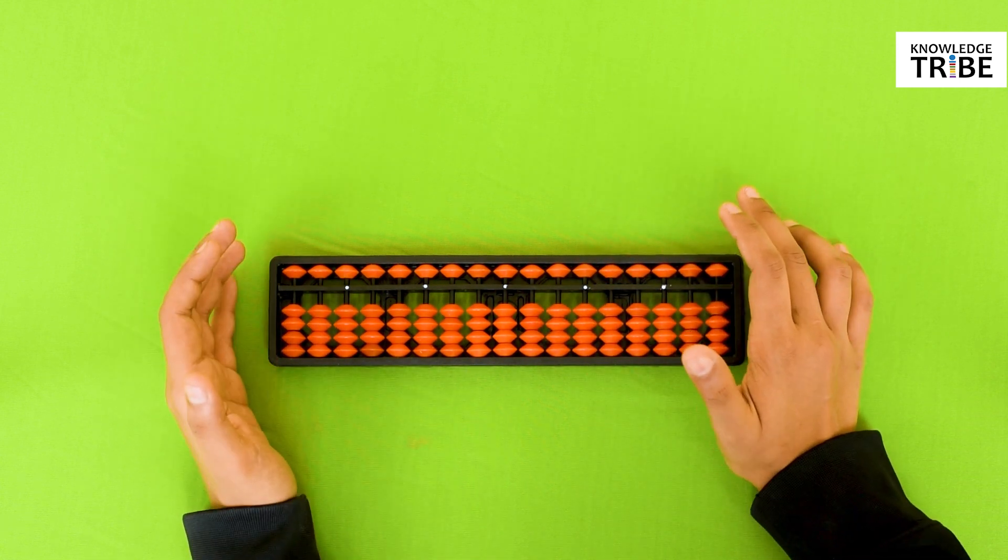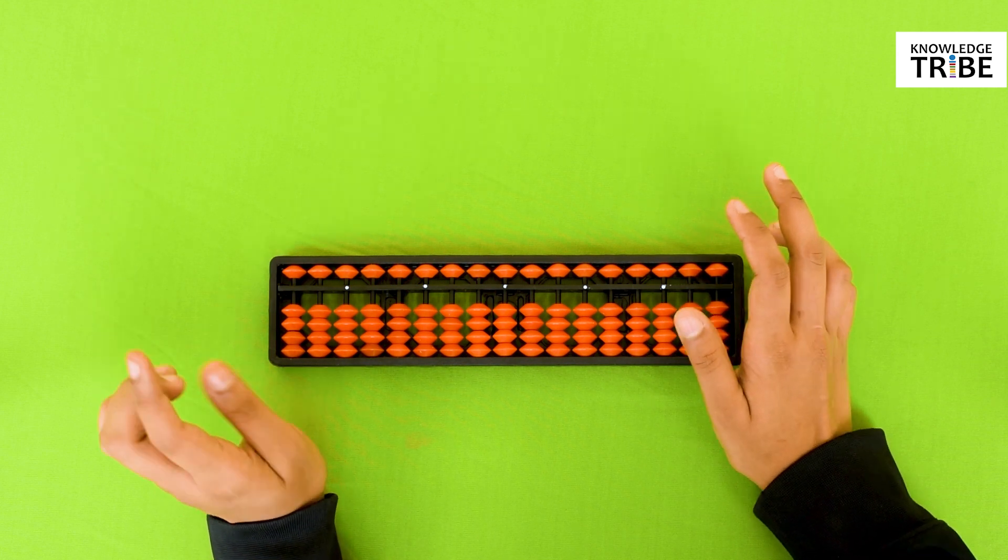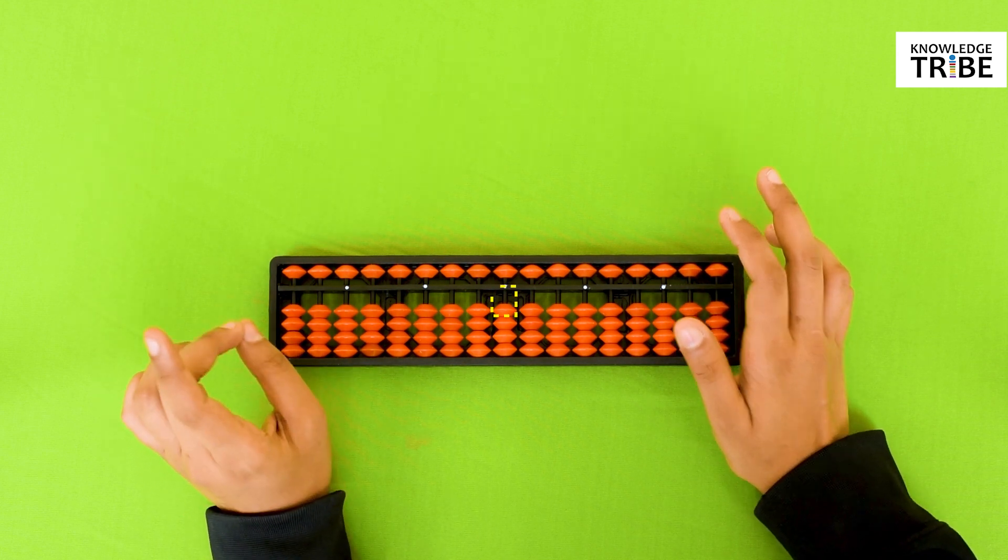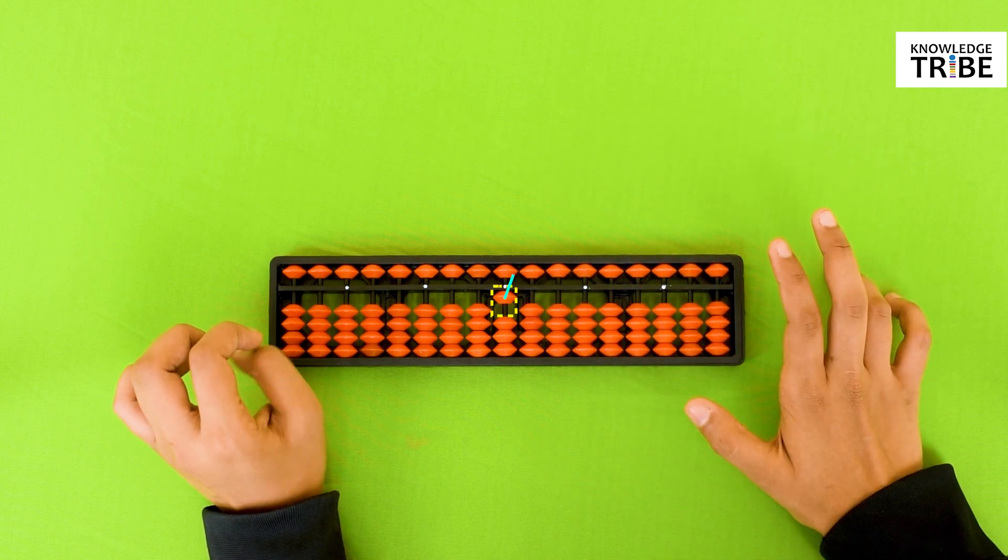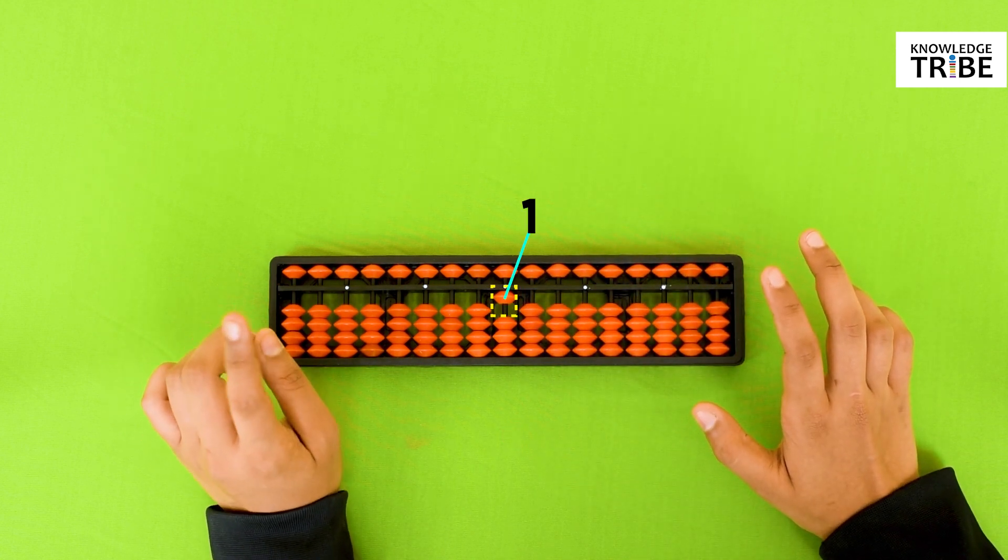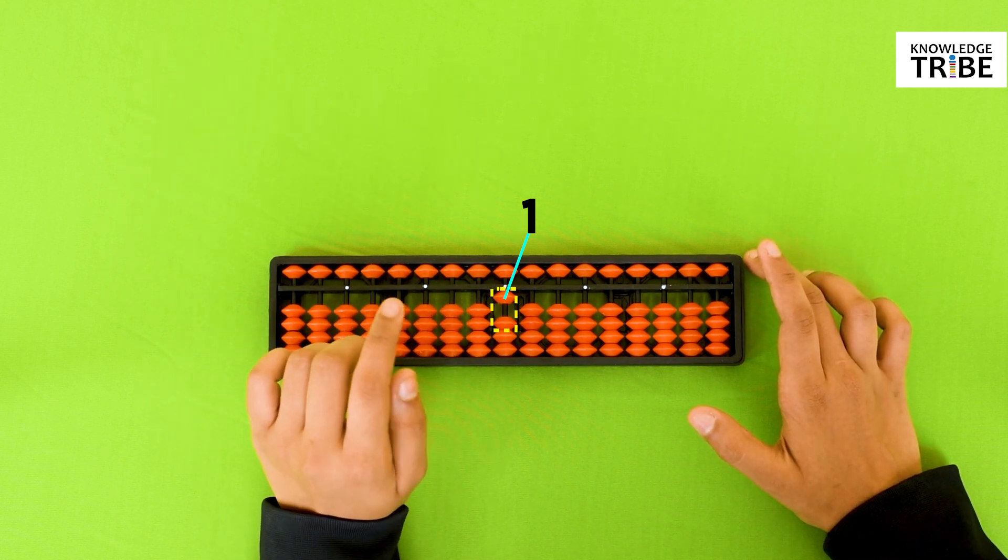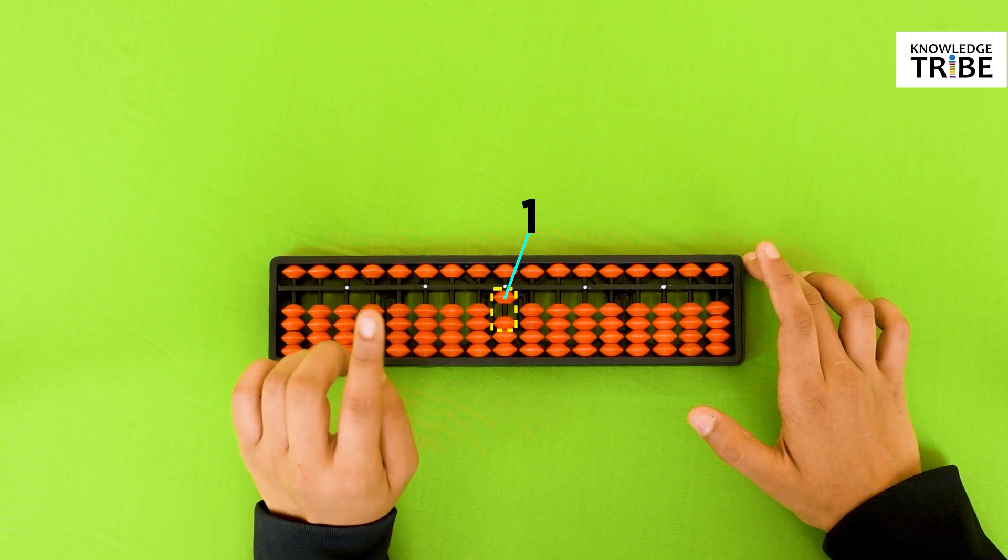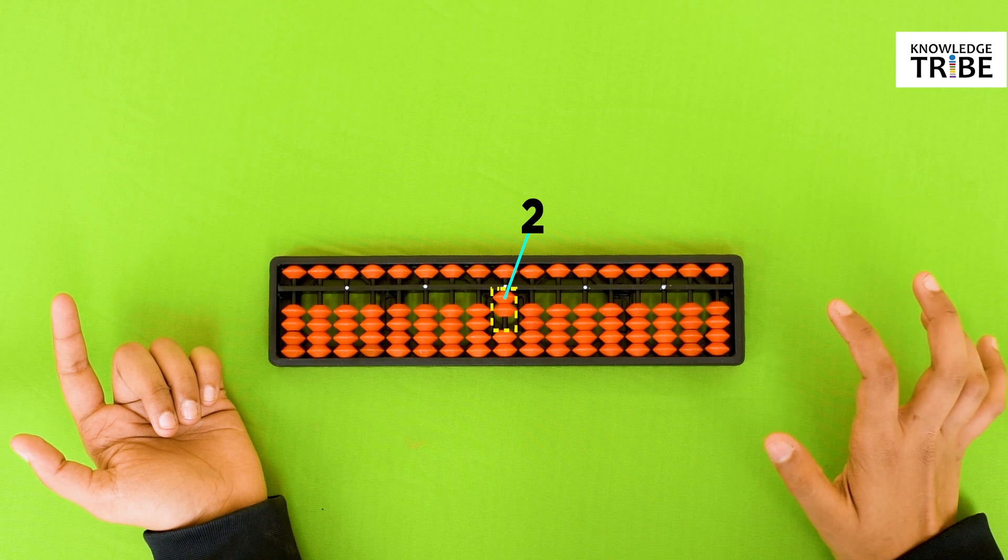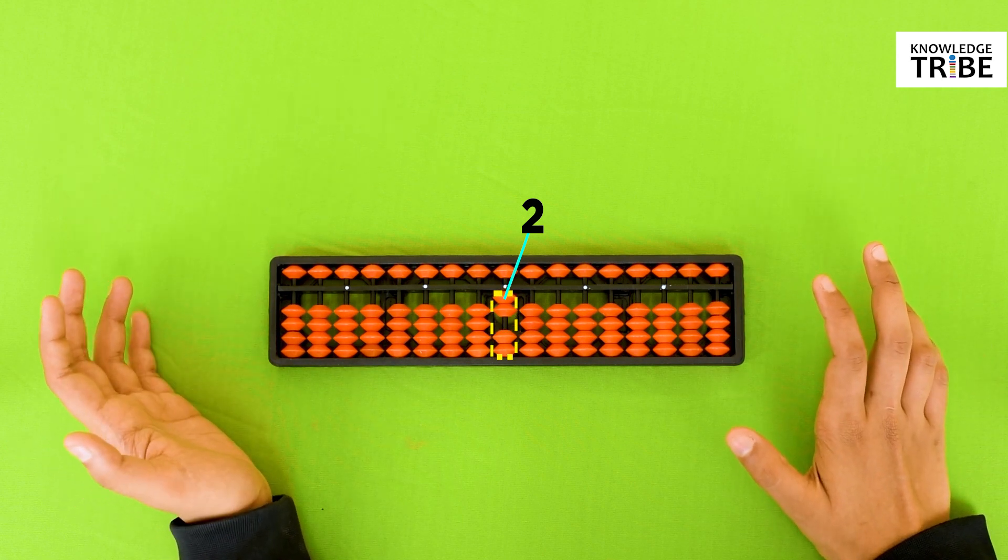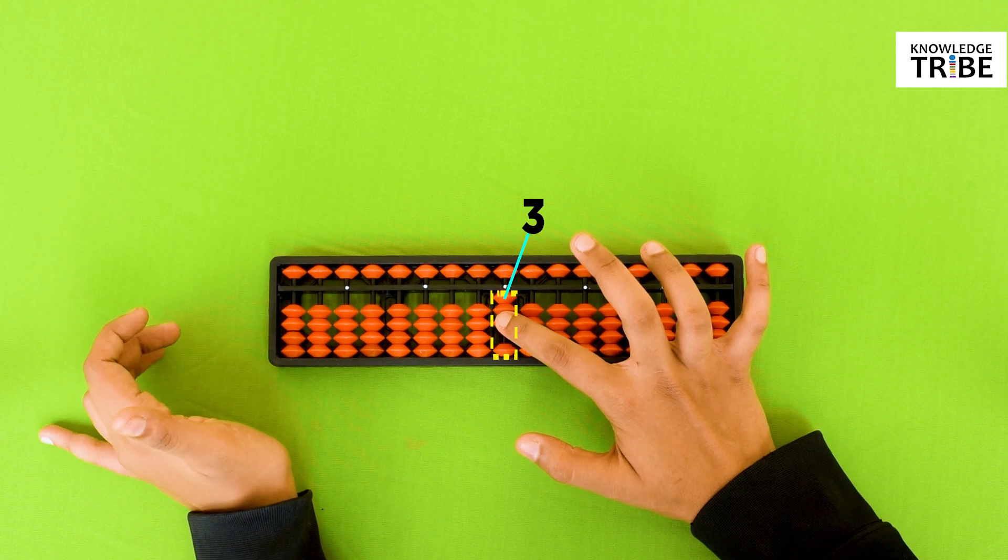If we want to count 1 on an Abacus, just move 1 earthly bead towards the center beam. The value of 1 earthly bead is 1. Now this is 1 and to count 2, we need to move 1 more earthly bead. This is 2. Like this, we can go on till 4. 3, 4.